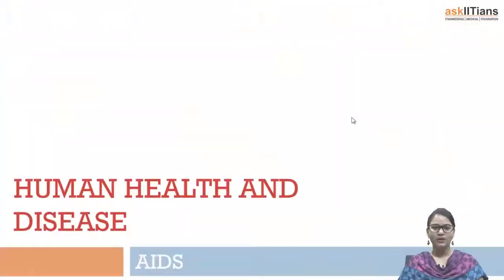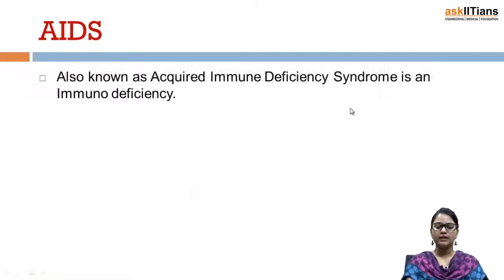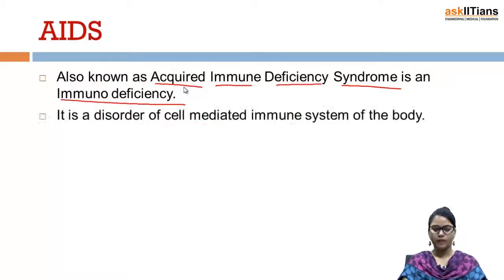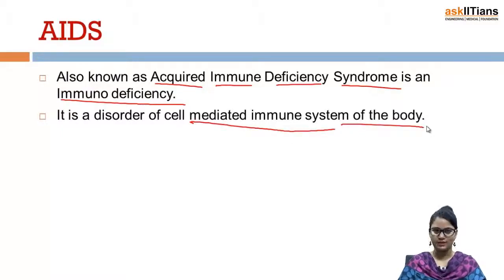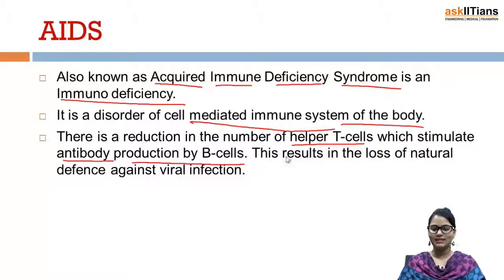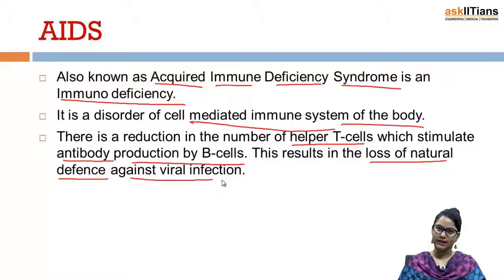AIDS, also known as Acquired Immune Deficiency Syndrome, is a disorder of the cell-mediated immune system of the body. There is a reduction in the number of helper T cells, which stimulate antibody protection by B cells. This results in the loss of natural defense against viral infection.